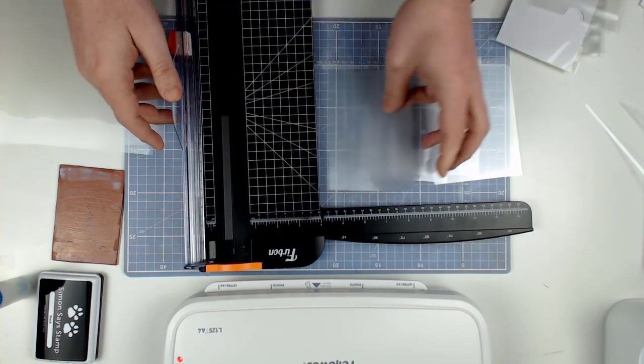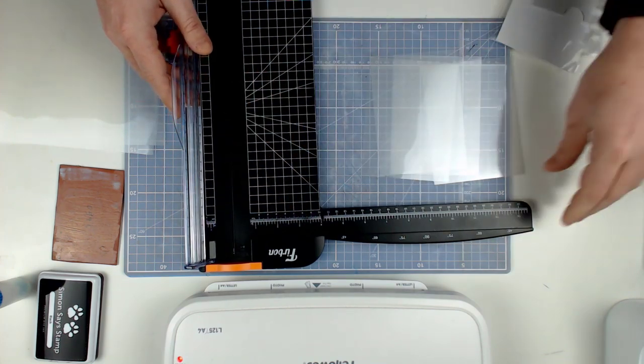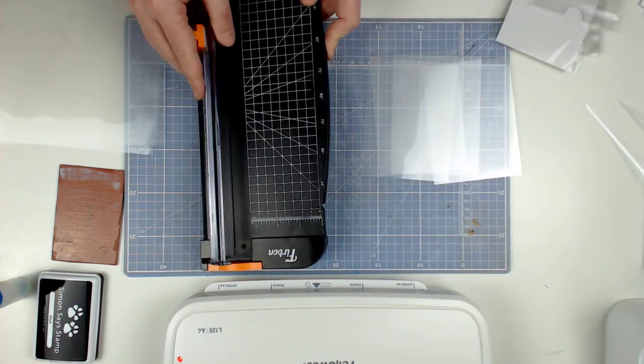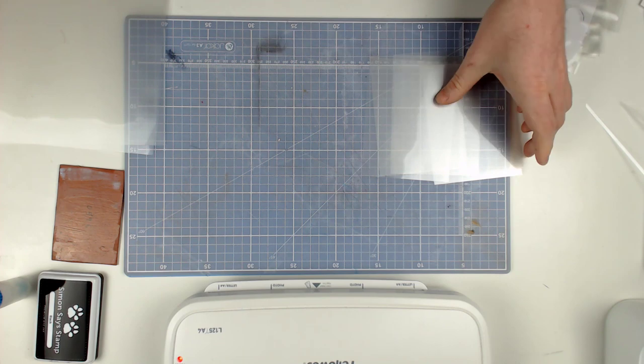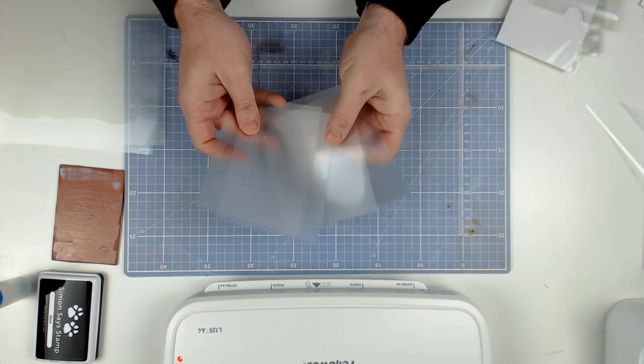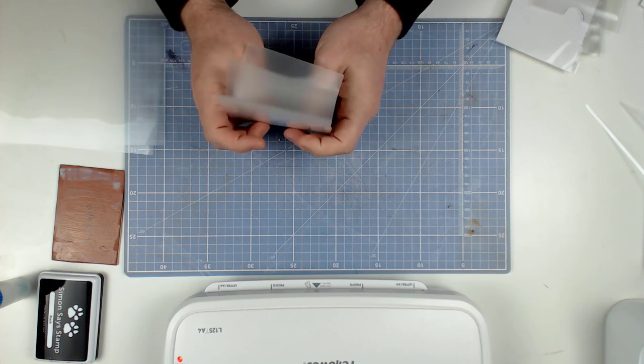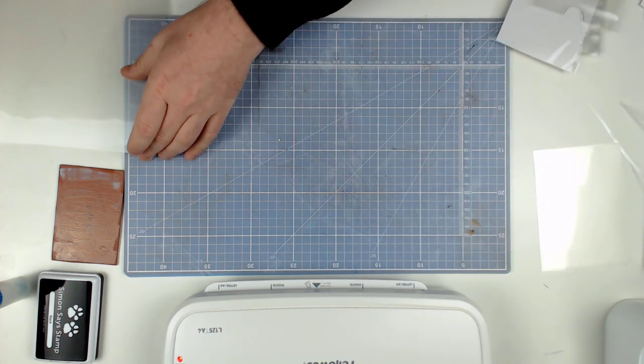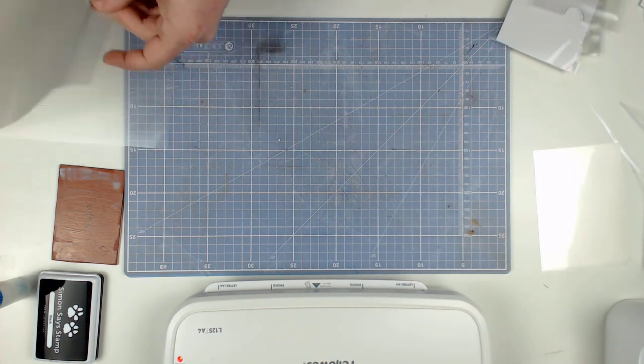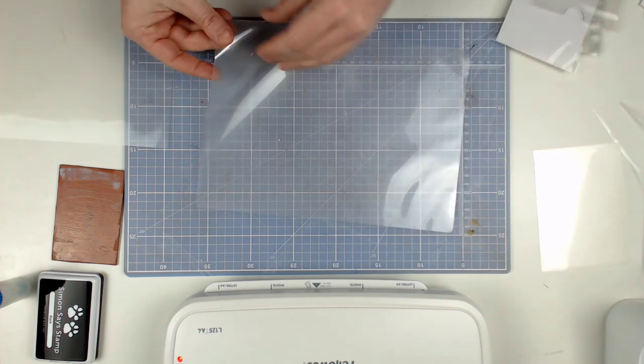Now laminating pouches have two sheets, obviously. So I have now got four pairs of sheets. I am going to grab another laminating pouch and open it up.